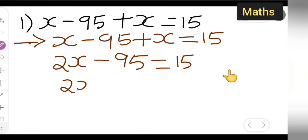You will have to write down 2x equals 15 plus 95. The first thing I have done is add x and x to get 2x. This minus 95, when I take it to the other side, will become plus 95.